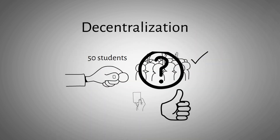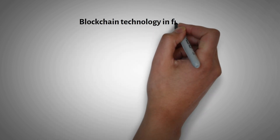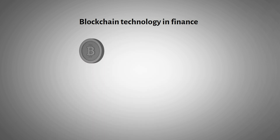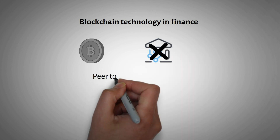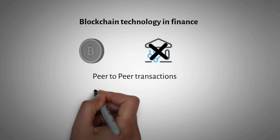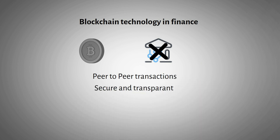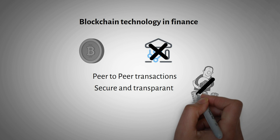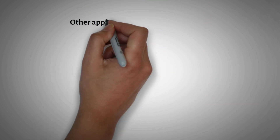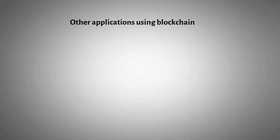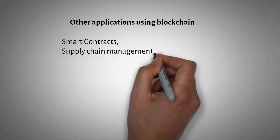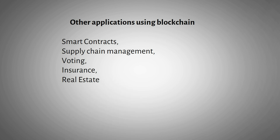That's why decentralization is a very important feature. Blockchain technology is widely used in the finance sector. The first cryptocurrency, Bitcoin, was created using blockchain. The technology is secure and transparent, reducing middleman involvement typically created by banks and credit cards. There is also potential for many other industries, including smart contracts, supply chain management, voting, insurance, and real estate.